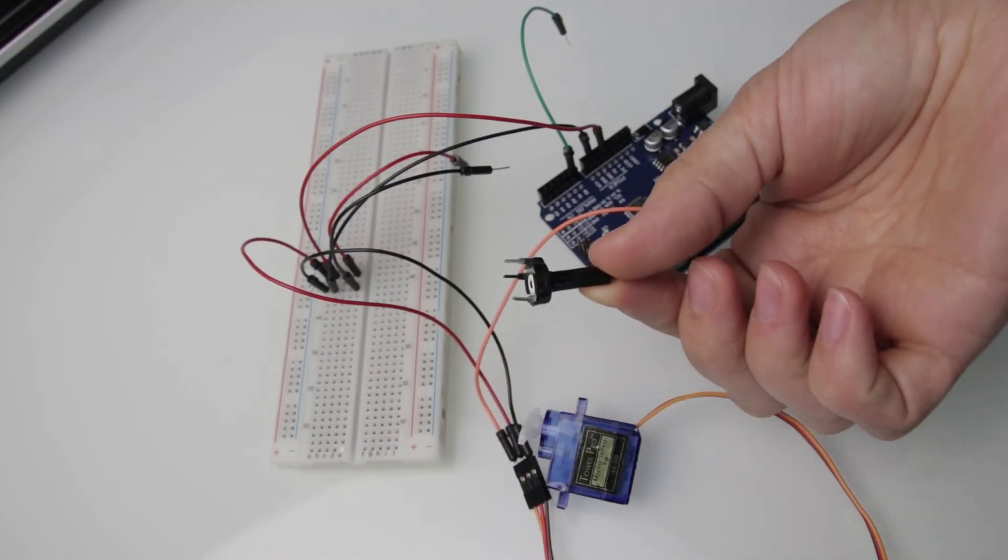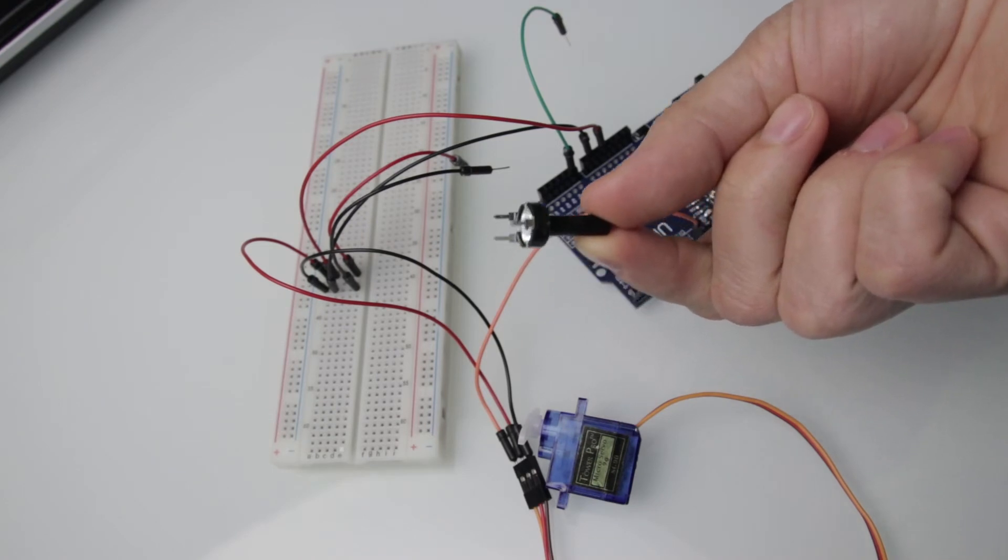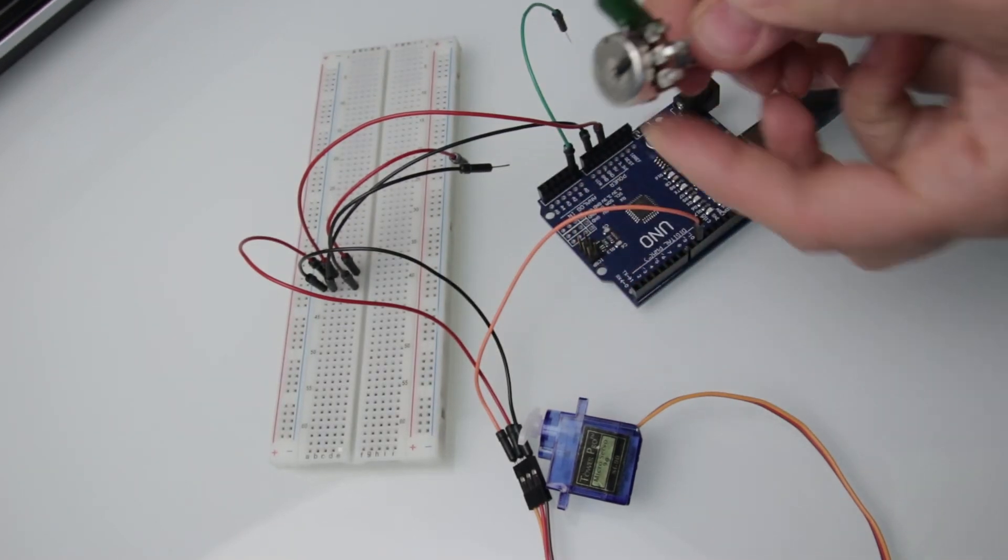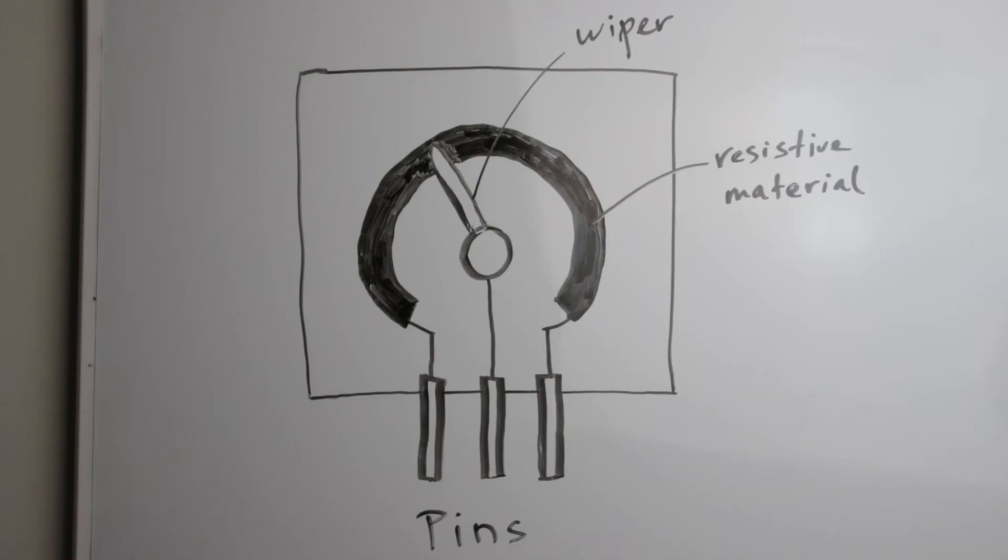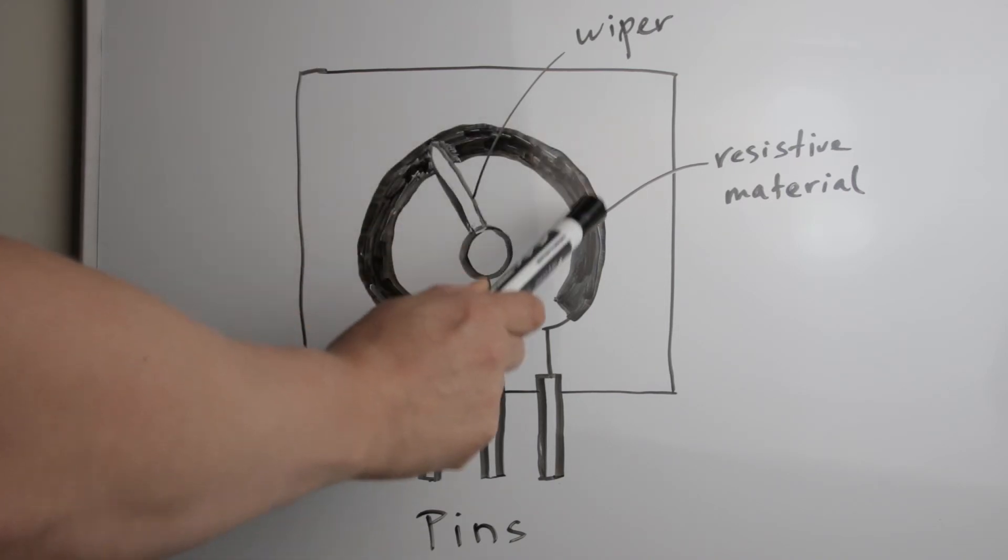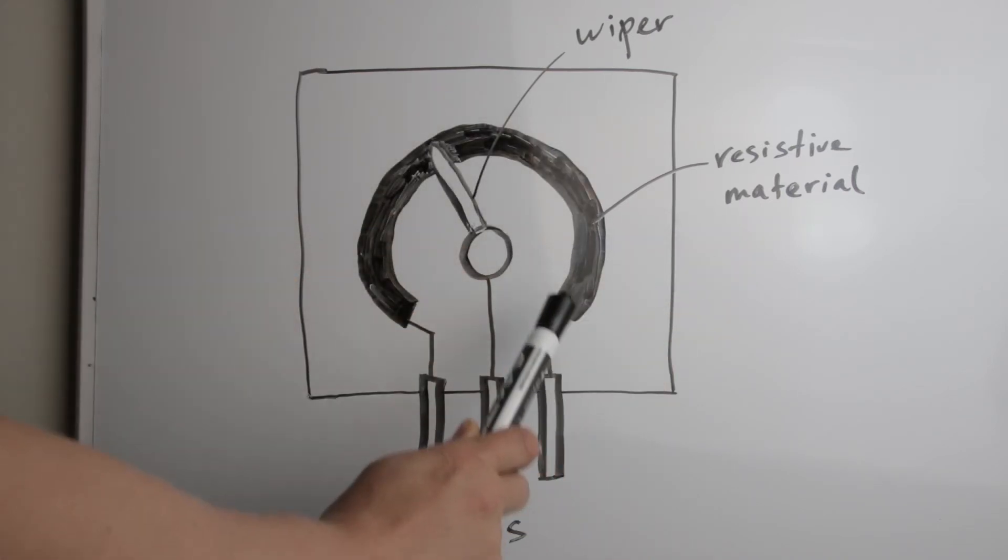Potentiometers, also known as pot, are nothing but variable resistors. They can provide a variable resistance by simply varying the knob on top of its head. The diagram shows the pots present inside a potentiometer. We have a resistive track whose complete resistance will be equal to the rated resistance value of the pot.